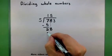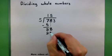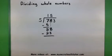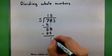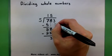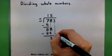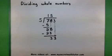5 times 5 is 25. And again, subtract it away. Let's borrow this 3 so we can continue the process one more time.